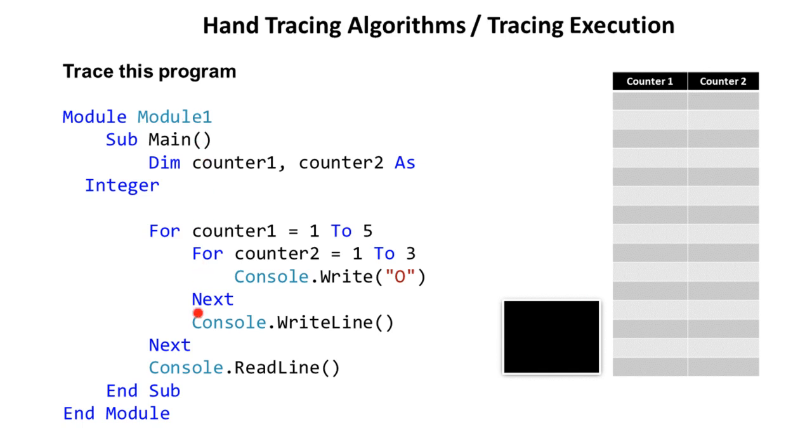So here's a basic algorithm. We can see here there's a couple of local variables, counter1 and counter2, and they're integers and we've written them up here in a trace table. We've then got a for loop and another for loop inside and this is our output window which has nothing in it. Now we're going to skip straight to the next part of this video and see what the completed trace table and output window would look like.